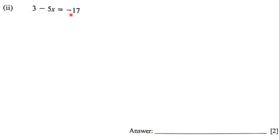Here our goal is to solve this linear equation. Notice that we have 3 - 5x = -17. The first thing we're going to do is send the 3 over. Notice here that this is positive 3.